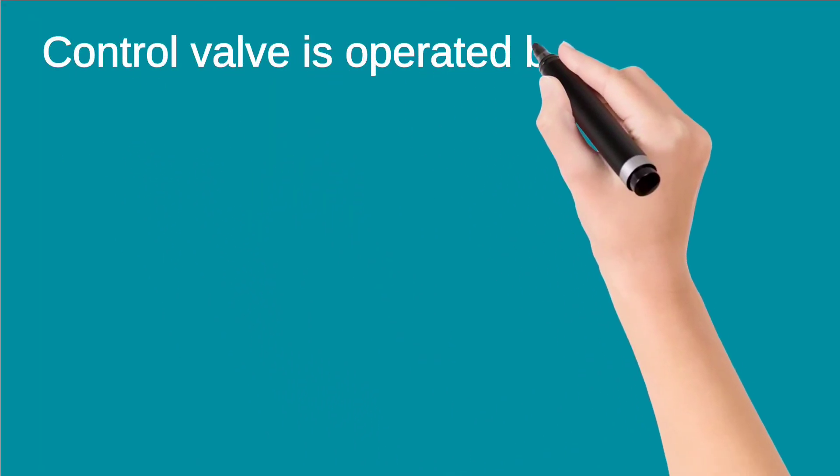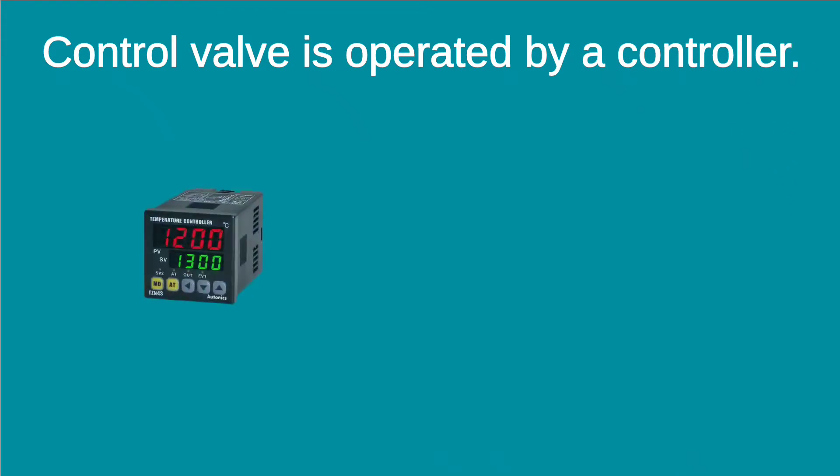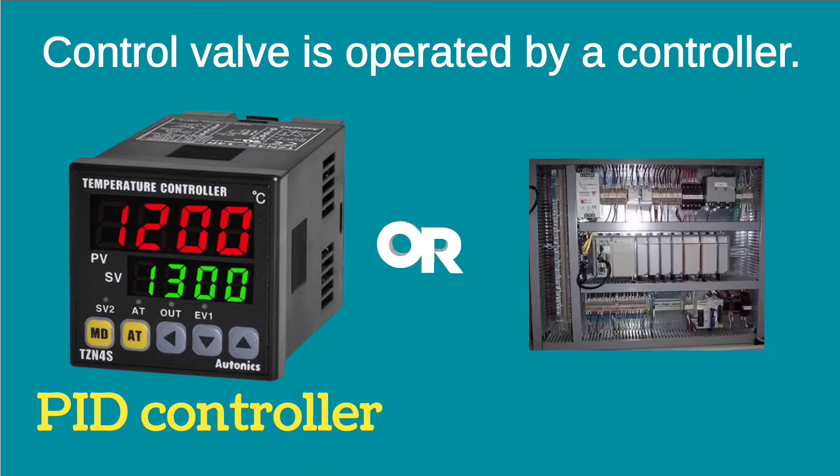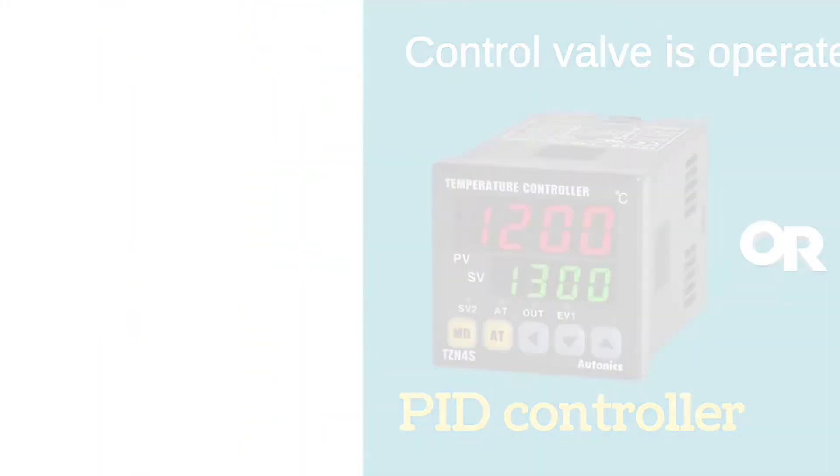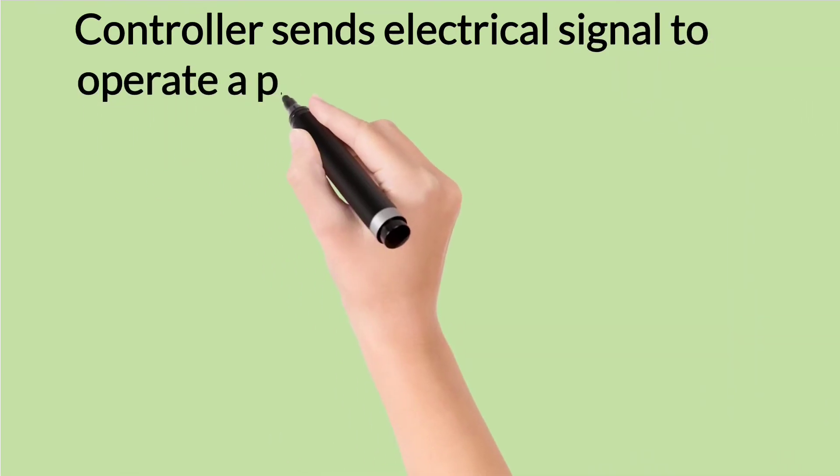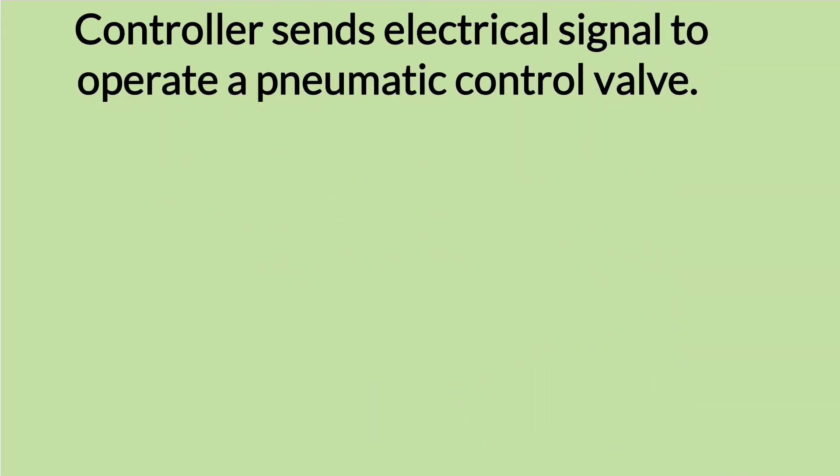A control valve is operated by a controller. It may be PID controller or PLC DCS controller. The controller sends electrical signal to operate a pneumatic control valve.